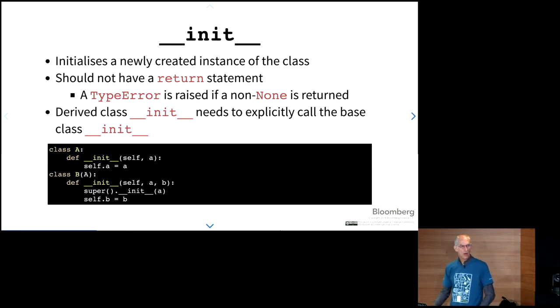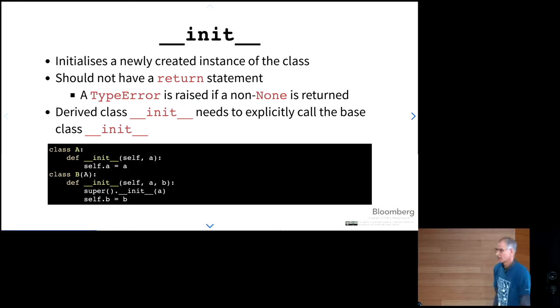One little note is if you have a derived class and you want to make sure that you are using the base class and initializing there as well, you need to explicitly call the base class Dunder init function. So that's what this little bit of code down here is showing, the base class and then the derived class calling the parent's class Dunder init.